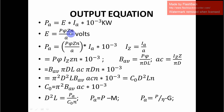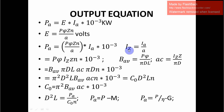The induced EMF E equals P·φ·Z·n divided by A volts, where P is the number of poles, φ is the flux in Weber, Z is the total number of conductors, n is the speed in RPS, and A is the number of parallel paths. We substitute E into the previous power equation to get P_A.